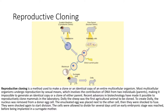To create Dolly, the nucleus was removed from a donor egg cell. The enucleated egg was placed next to the other cell, then they were shocked to fuse. They were shocked again to start division. The cells were allowed to divide for several days until an early embryonic stage was reached, before being implanted in a surrogate mother.